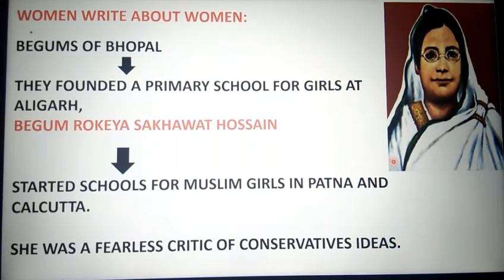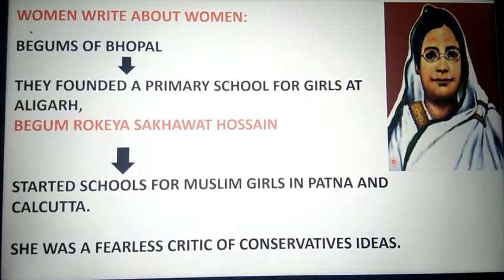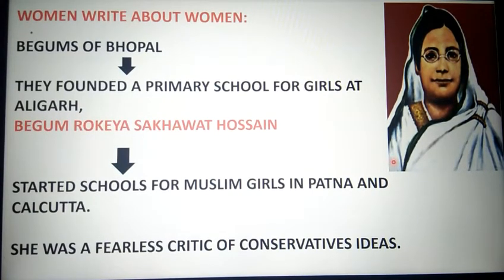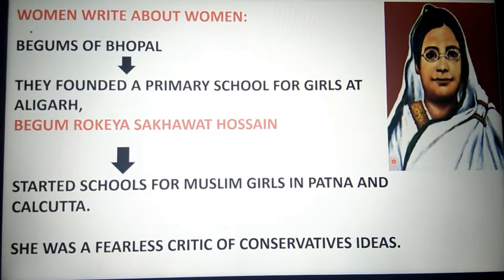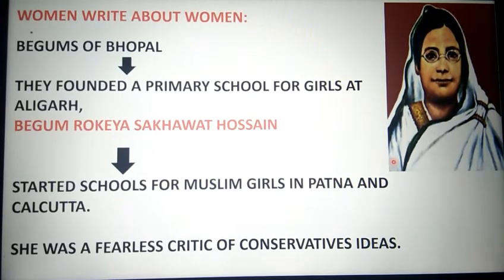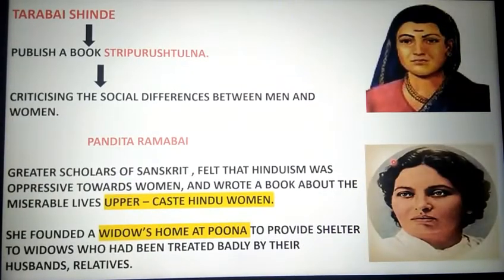For example, the Begams of Bhopal founded a primary school for girls at Aligarh. Another very important personality — Begam Rokeya Sakhawat Hossain — started Muslim girls' schools in Patna and Calcutta. She was a fearless critic of conservative ideas. She criticized the conservative notion that education could not reach girls, or if it did it should only be at home — and advocated that girls should go to school.